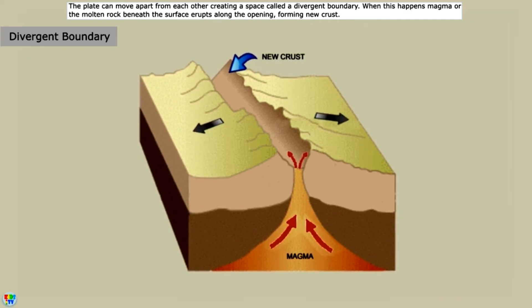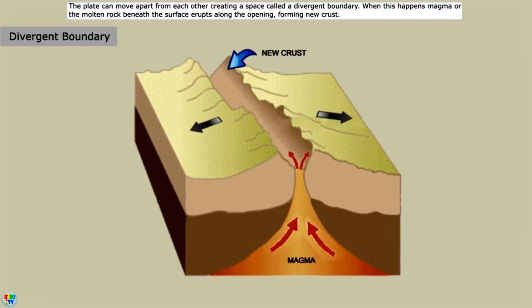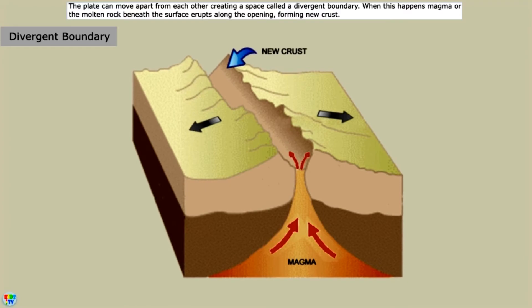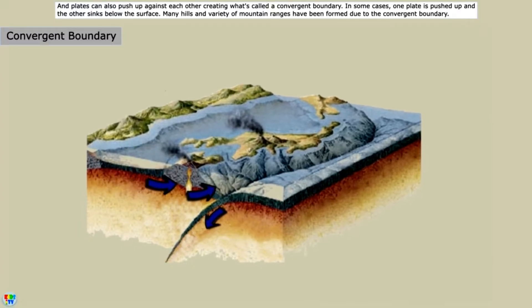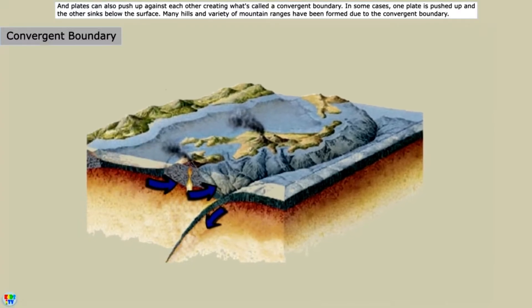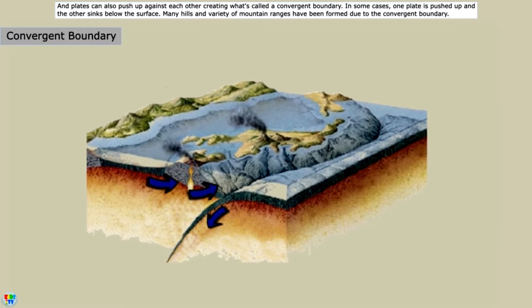When this happens, magma, or the molten rock beneath the surface, erupts along the opening, forming new crust. And plates can also push up against each other, creating what's called a convergent boundary.